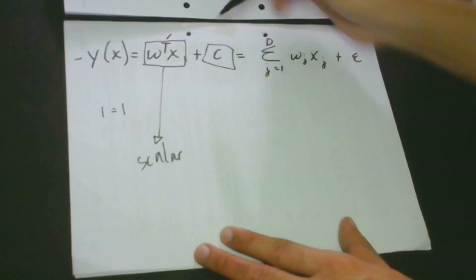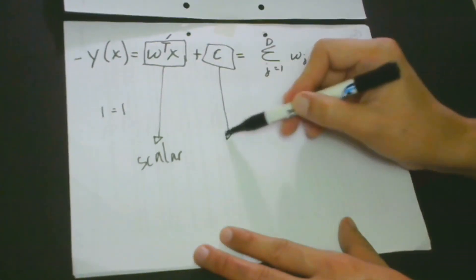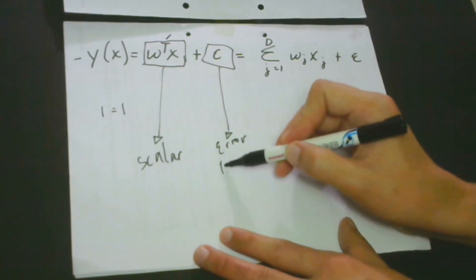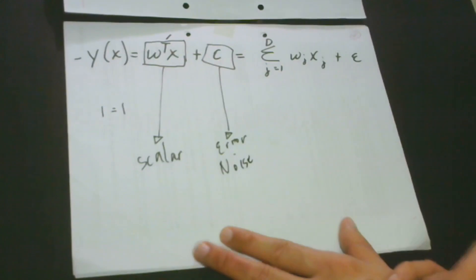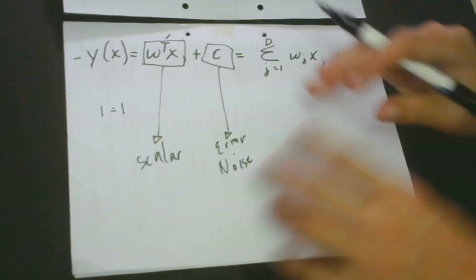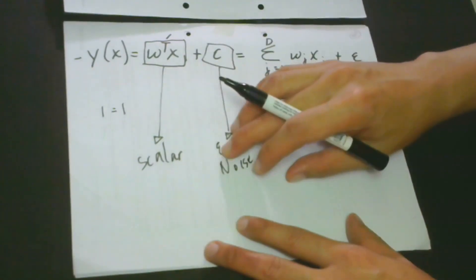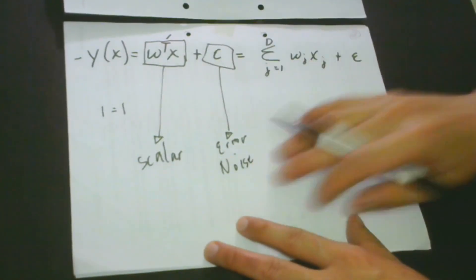And what about this one? What is this? So this is actually the error, or we also call this one the noise. And this is the difference between the linear prediction and the real value.